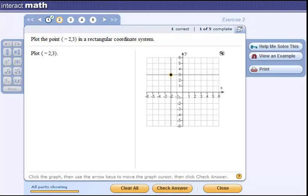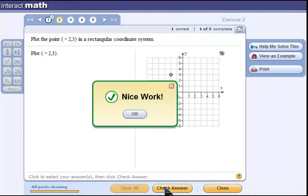And I release. Remember, this is the x coordinate - you move sideways either to the left or right. Left if you've got a negative sign and right if you don't. The second number is called the y coordinate. If it's positive you move up, if it's negative you move down. And I check my answer and there I have it. Nice work.